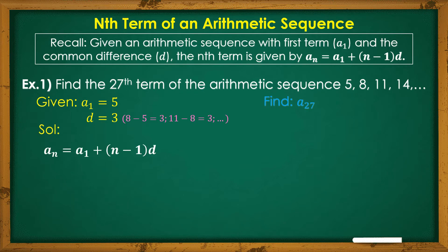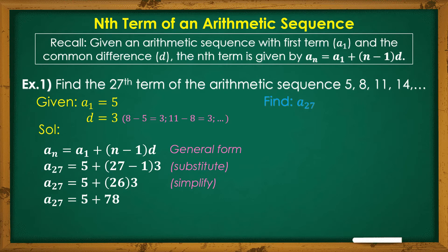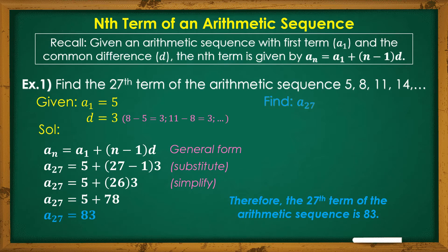Let's see the solution. Using the general rule A sub N equals A sub 1 plus N minus 1 times D, let's substitute the given. We are looking for A sub 27, so our N is 27, A sub 1 is 5, and D is 3. Simplifying: 27 minus 1 is 26, times 3 is 78, plus 5 is 83. That gives us the 27th Term, which is 83.